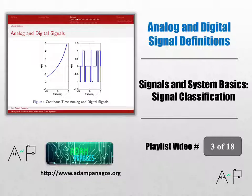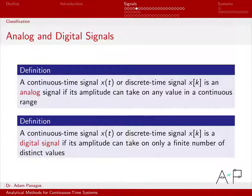Let's take a look at the definitions of what it means to be an analog signal or a digital signal. Both of these descriptions have to do with the possible values the amplitude of the signal can take on.